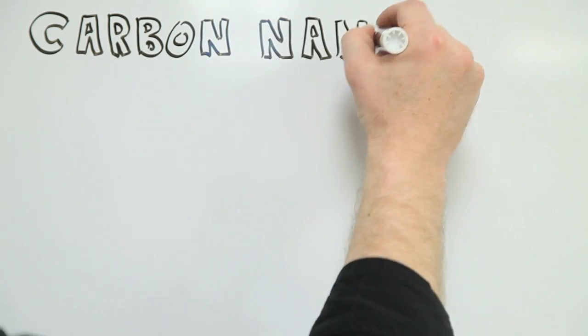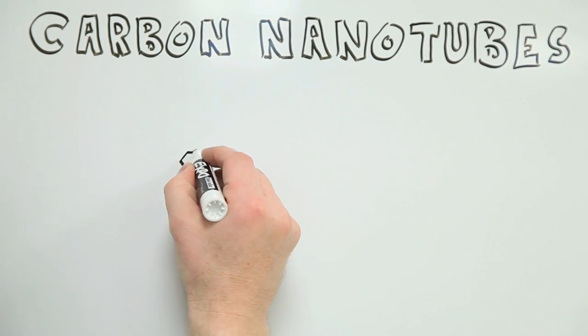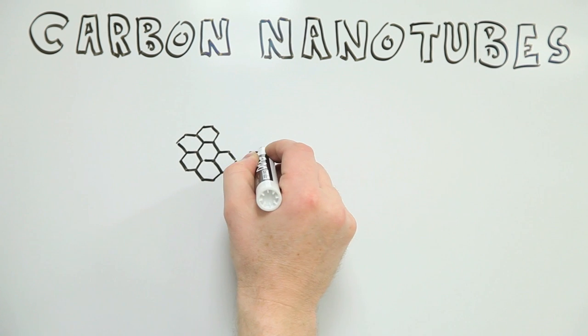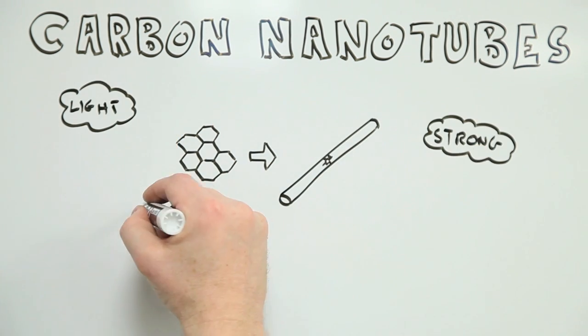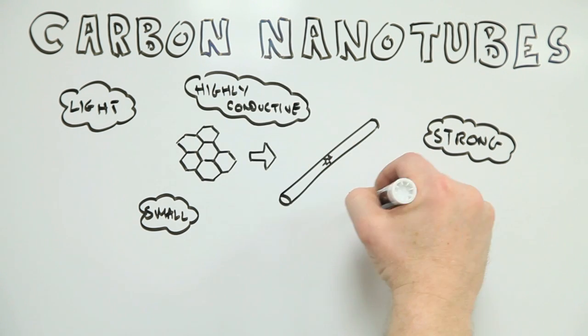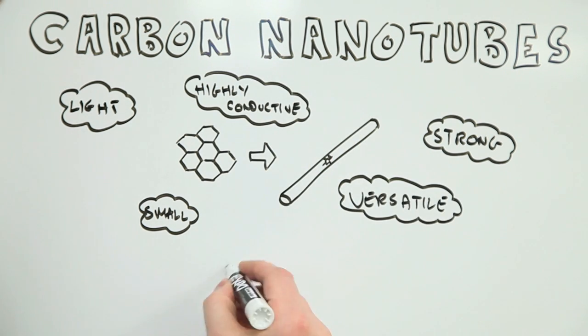Carbon nanotubes are a fantastic material. Light, strong, small, highly conductive and versatile, they're finding uses in everything from lightweight composites to high-performance batteries and touch screens to drug delivery systems.